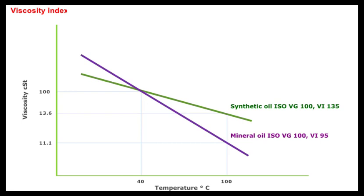In the example shown here, two ISO VG100 oils with different viscosity index are compared. Although at 40 degrees Celsius the viscosity is the same, at 100 degrees Celsius the oil with a viscosity index of 135 reports a higher value compared with the oil having a viscosity index of 95.